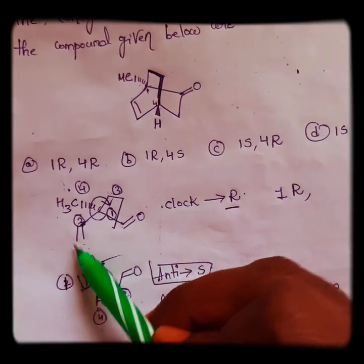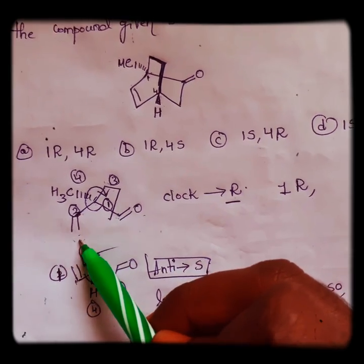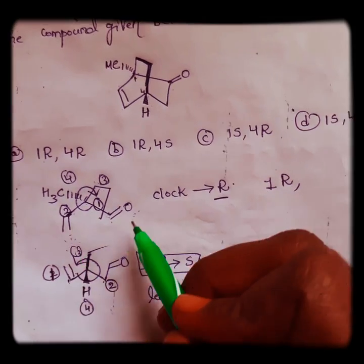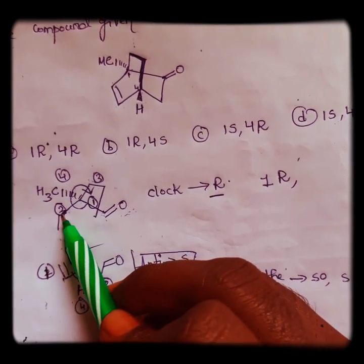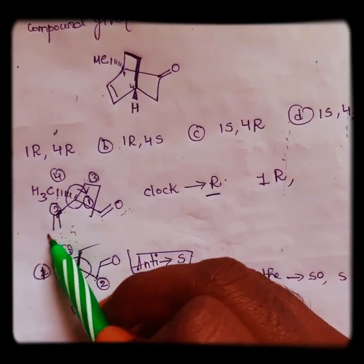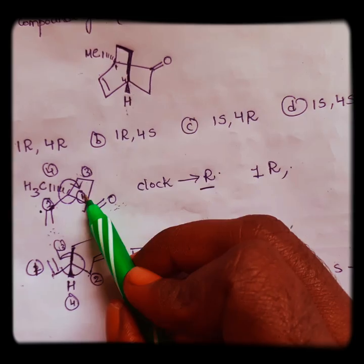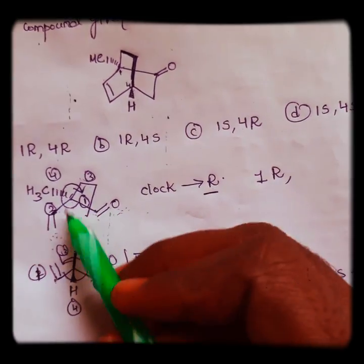On all four sides of this carbon, there is carbon. So next we look at further connections. Here we have C double bond C, and here we have C double bond O. We know that oxygen has higher atomic number than carbon, so the carbon double bond oxygen has higher priority than carbon double bond carbon. So first priority is this.